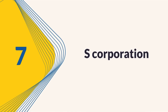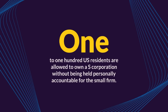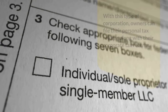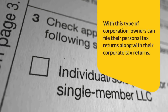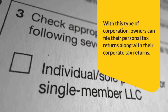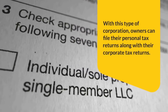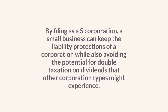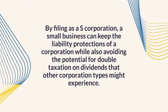7. S Corporation. 1 to 100 U.S. residents are allowed to own an S Corporation. In an S Corporation, owners can file their personal tax returns along with their corporate tax returns. A business can keep the liability protections of a corporation while avoiding the potential for double taxation on dividends.